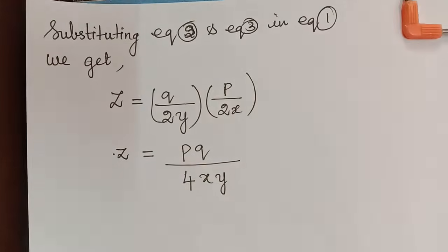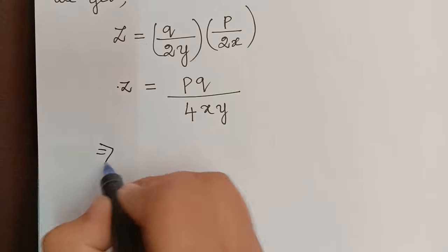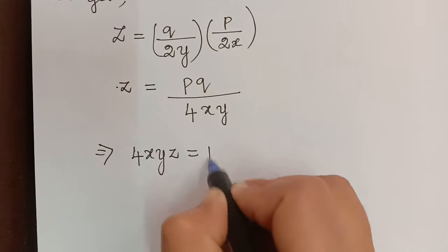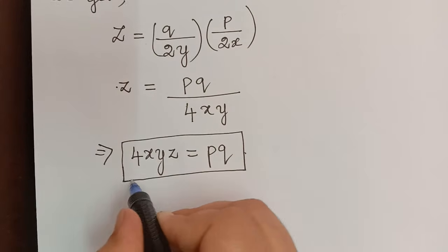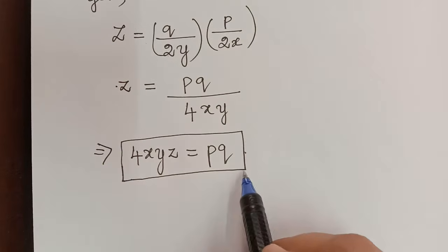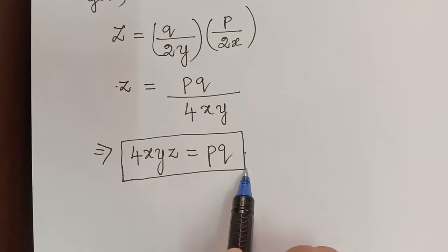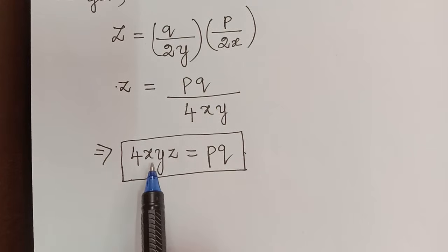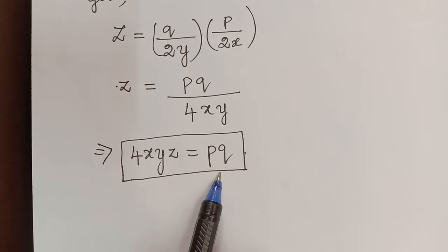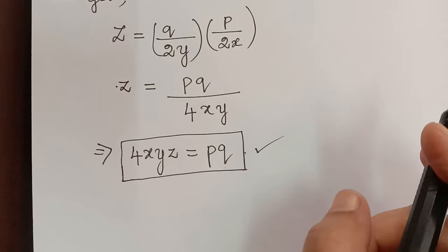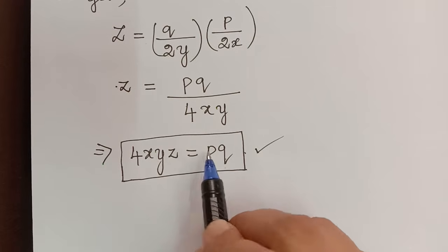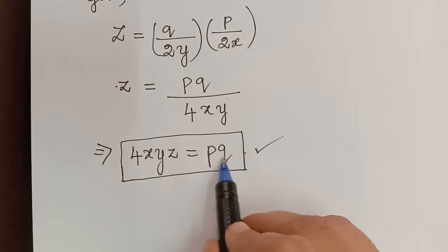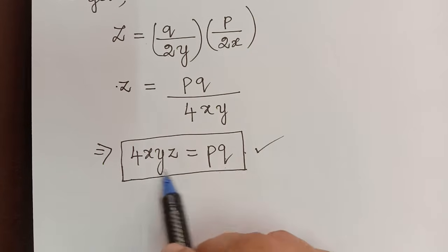Multiplying both sides by 4xy, we get 4xyz = pq. This is the required partial differential equation obtained after eliminating the arbitrary constants a and b from the given equation. The solution does not involve the arbitrary constants a and b — it is independent of those two constants. Therefore, 4xyz = pq is the required answer, where p = ∂z/∂x and q = ∂z/∂y.